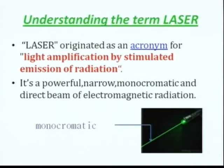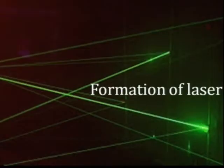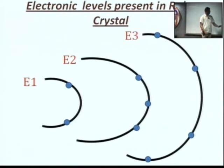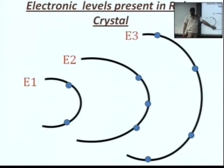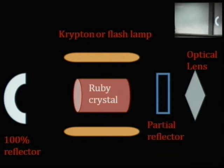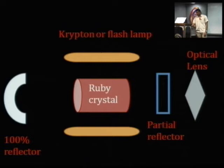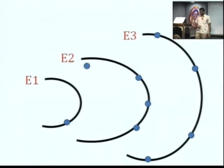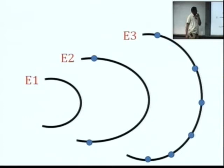Let us understand how laser light is formed. Consider a ruby crystal — you can see the electronic configuration for ruby crystals, with electrons present in energy levels E1, E2, and E3: ground state, first state, and second state. Consider this setup shown here: you have one ruby crystal, two krypton lamps, a 100% reflector, and a partial reflector lens. When external energy is supplied from the krypton or xenon lamp to the ruby crystal, the electrons move from the ground state to the higher energy levels.